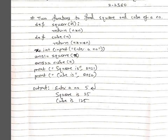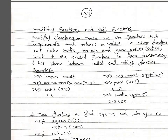See more examples in my notes: two functions to find the square and cube of a number. The first function takes an input and returns the square. The second function takes an input and returns the cube. I read a number, pass it to square and get the result back, pass it to cube and get the result back, then print both. These two are fruitful functions — they take input and give the result back.